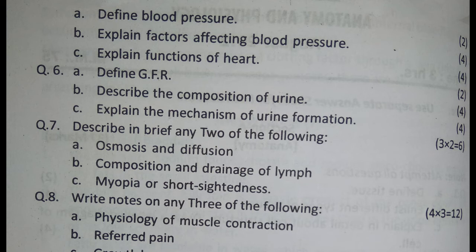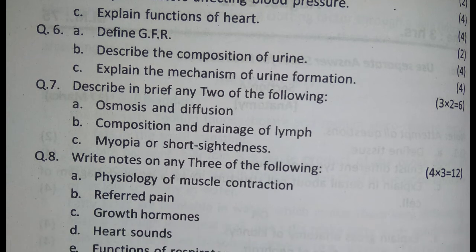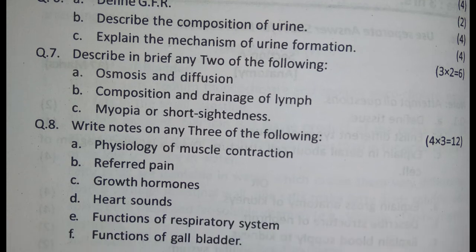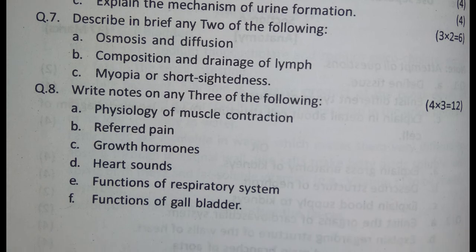Question C: Explain the mechanisms of urine formation, 4 marks. Question number 7: Describe in brief any two of the following, 6 marks — osmosis and diffusion. Attempt 2 questions, 3 marks each: composition and drainage of lymph, myopia and short-sightedness.